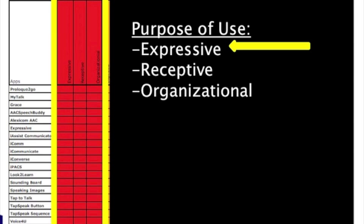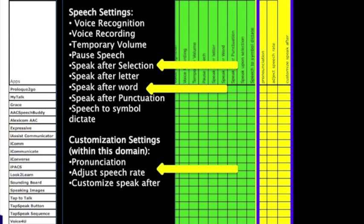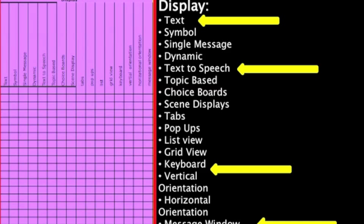For purpose of use, we need an app for expressive purposes. Output-wise, we want an app that has synthesized speech and female voice output. For speech settings, we would like it to speak after selection, speak after a word, and we want to be able to adjust the rate of speech — these were more options for over-the-phone use. Representation-wise, we want something with text. Display-wise, it needs to be text-to-speech, with a keyboard and a message window.